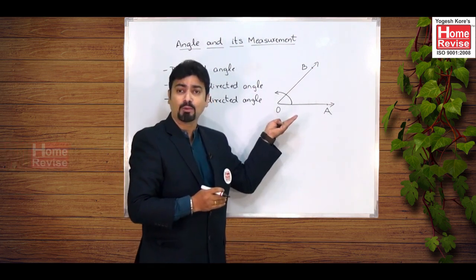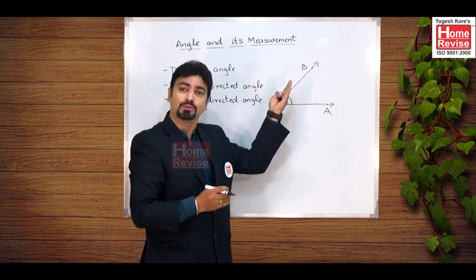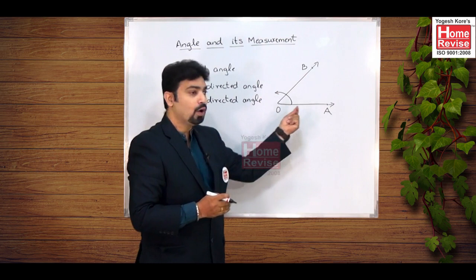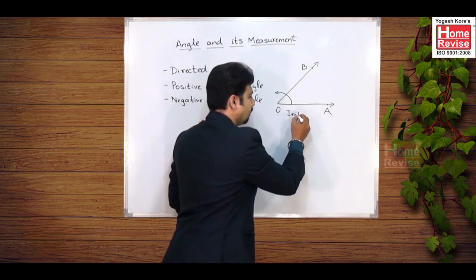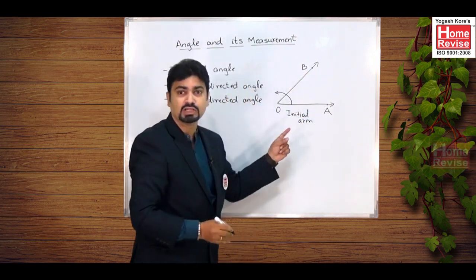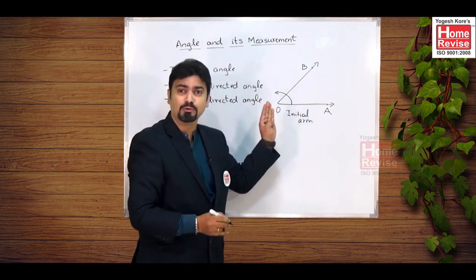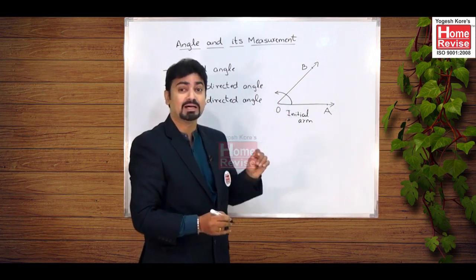Here OA is known as the initial arm, while the final position of the angle, the final position of ray OA, is known as the terminal arm.